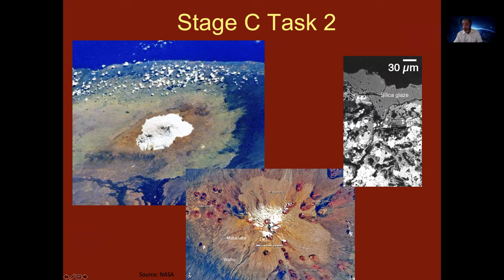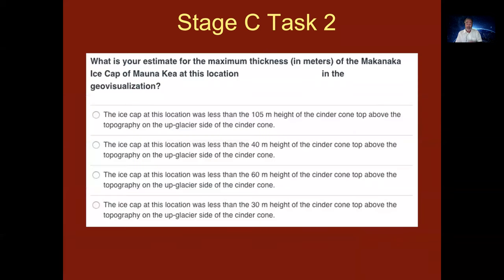This is an electron microscope view of the silica glaze that's about as thick as maybe three or four pieces of your hair, which gives you this lighter coloration. In the game, you will see the Landsat image and you'll see the lighter coloration that defines the edge of the glacial deposits. The task in this question is for you to estimate the maximum thickness in meters of this ice cap.